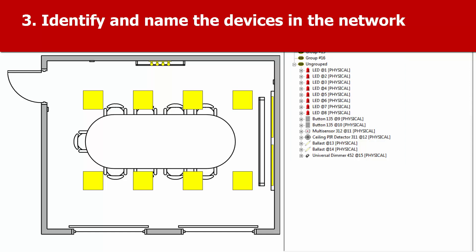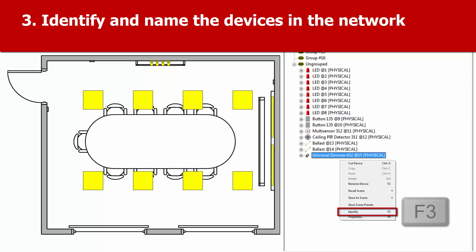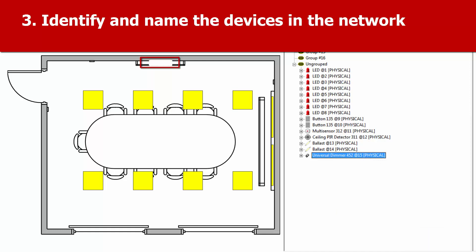First, we need to identify which DALI devices are controlling which lamps. Select a DALI device in Toolbox and right-click Identify, or press F3. The lamps connected to the DALI device will begin to flash. Now you can see which DALI device it is, rename it in Toolbox.